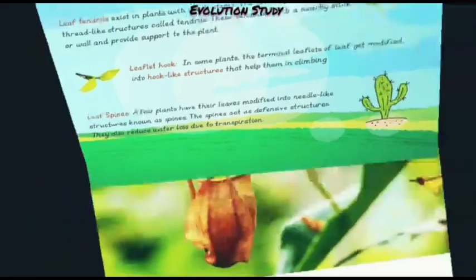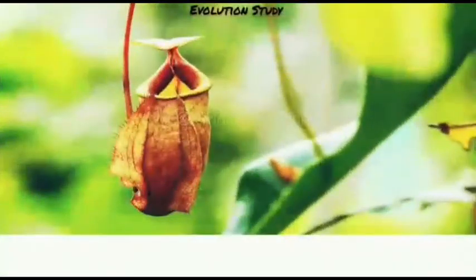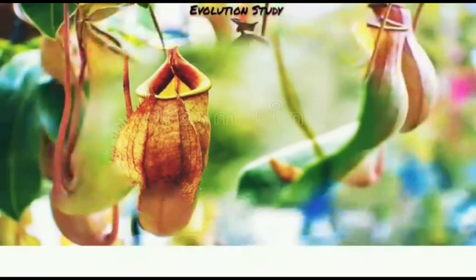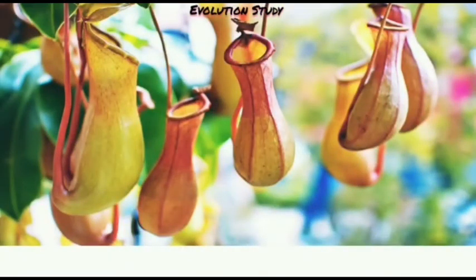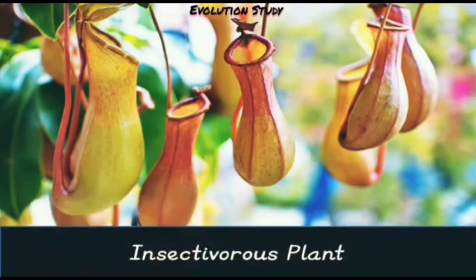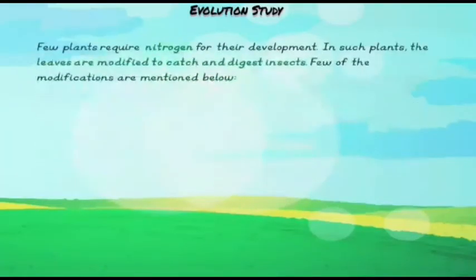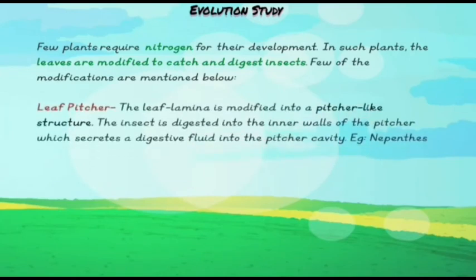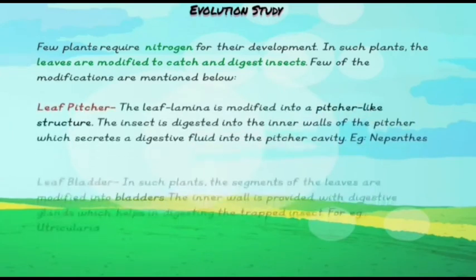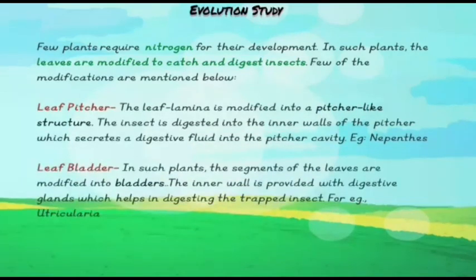These were some kinds of insectivorous plants. A few plants that require nitrogen for their development have leaves modified to catch and digest insects. Few of the modifications are mentioned below.